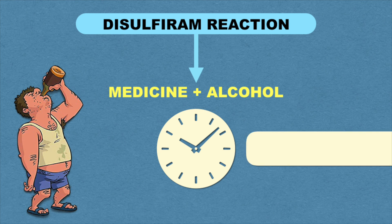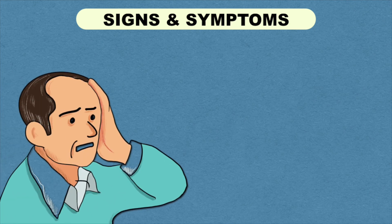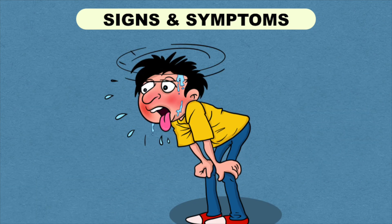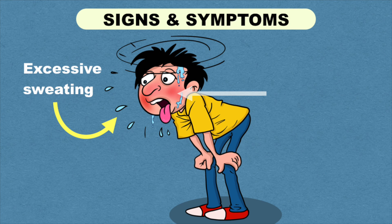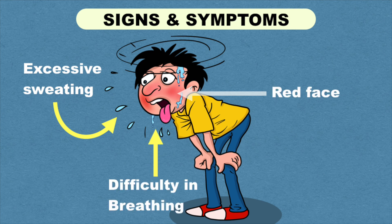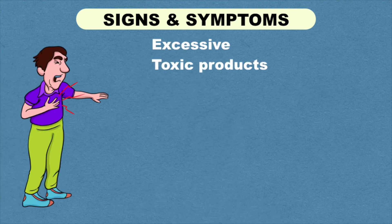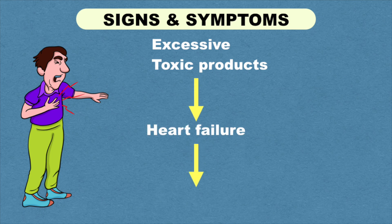The reaction starts immediately after taking the medicine, 10-30 minutes after drinking alcohol. You may have a headache in the beginning which increases gradually, then you might feel dizzy and start vomiting. There is excessive sweating and your face and upper chest starts turning red. Later you may experience difficulty in breathing, blurred vision, chest pain, and palpitations. If the level of toxic compound increases too much, there can be a dangerous situation like heart failure which can also lead to death.